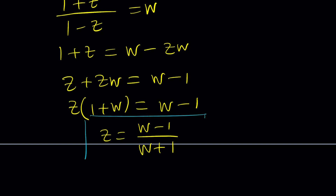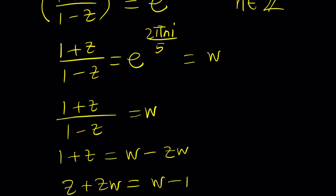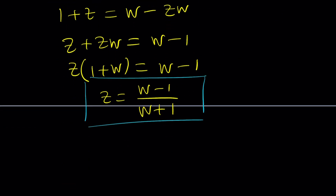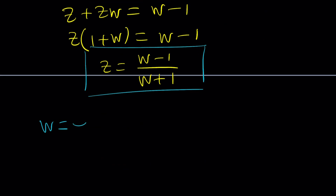Now we're going to use different values of w. Since n is an integer, n can be 0, 1, 2, 3, and 4. You could also go 1 through 5 — it doesn't matter because it's cyclic. In general, w equals e to the power 2πni over 5, for n from 0 through 4.